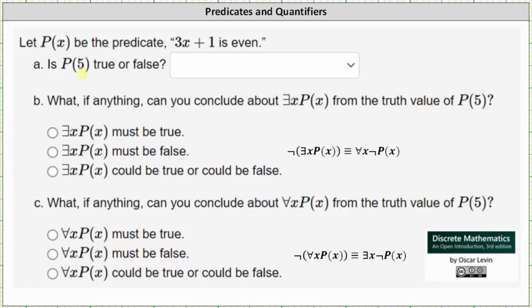Well, P of 5 is the statement 3 times 5 plus 1 is even. And 3 times 5 plus 1 is equal to 15 plus 1, or 16. 16 is even is true, which indicates P of 5 is true.